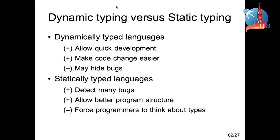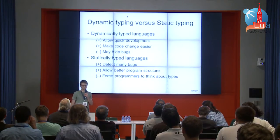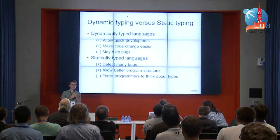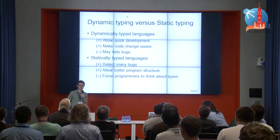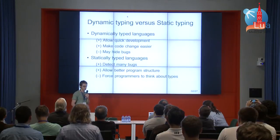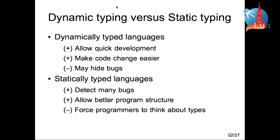I want to start with this discussion about dynamic typing versus static typing. Dynamically typed languages such as Lua usually avoid static types in favor of runtime type tags to be more simple and more flexible. This simplicity and flexibility allows us programmers to do faster programming and it is also easier to change code according to changing requirements. However, dynamic typing may hide bugs that we will discover only after the code is deployed. In contrast, statically typed languages detect many bugs during the development phase.